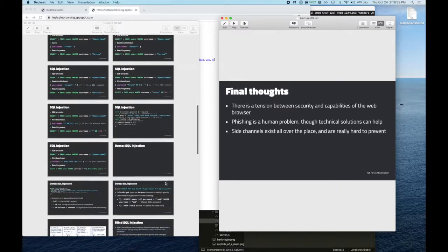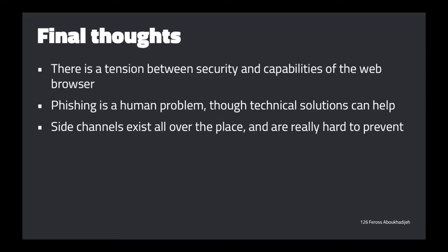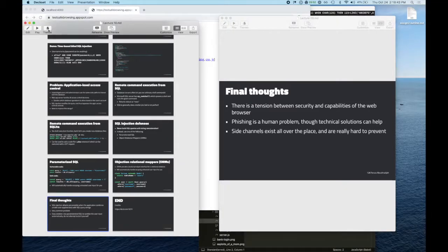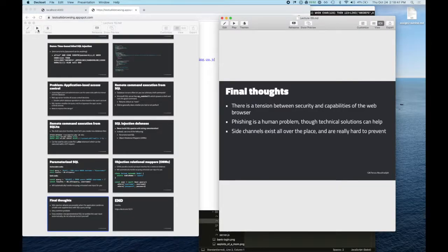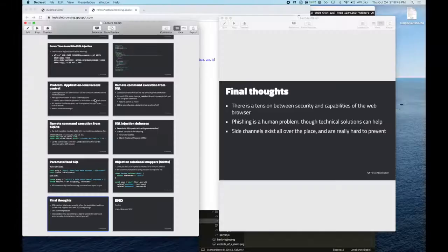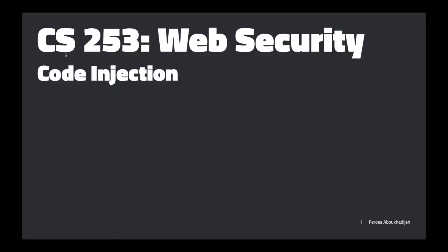To conclude: there's a tension between security and the capabilities of the web browser. Phishing is a human problem, and side channels are everywhere and really hard to prevent. Now we're switching to code injection — moving from the client side to the server side.